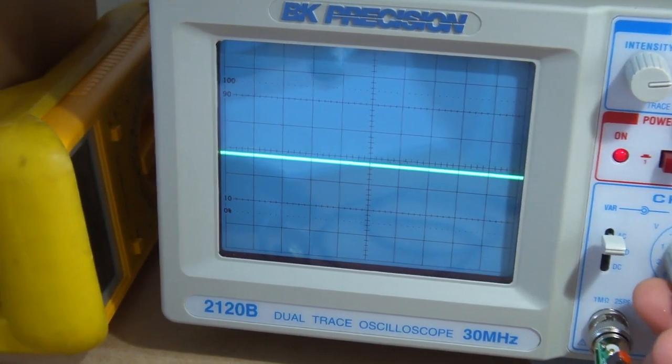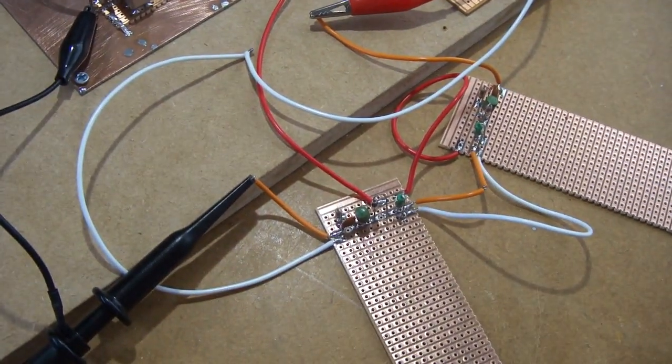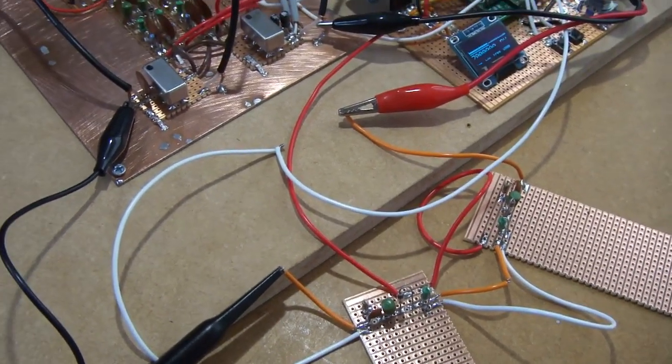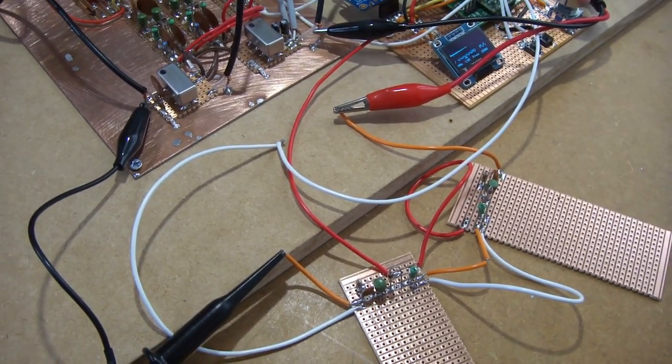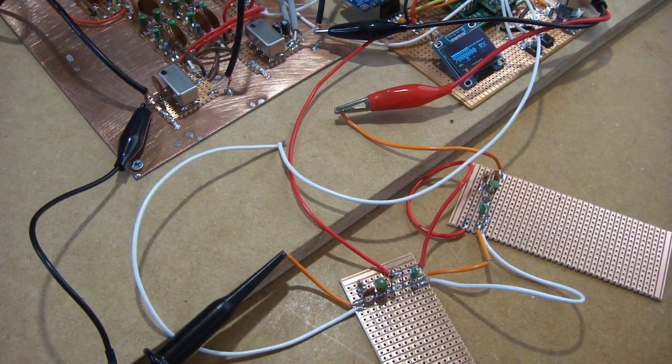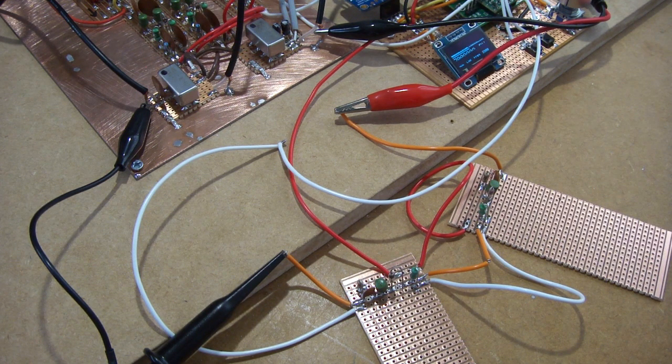So I guess that's the compromise. If you want to have slightly less insertion loss, then you're going to have to put up with some leakage. So I think at this stage of the game, I am going to probably stick with these little germanium ones and continue tinkering with those.